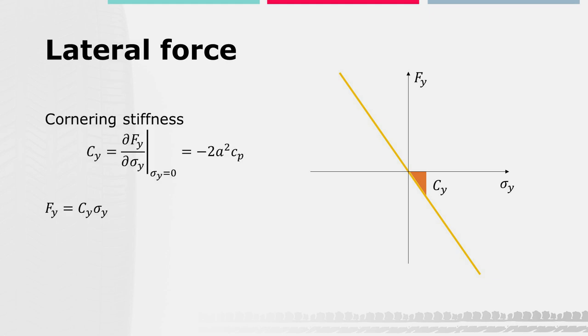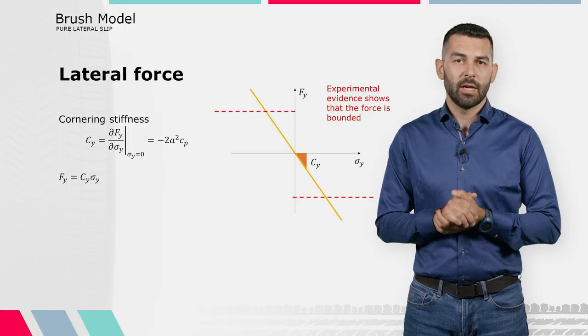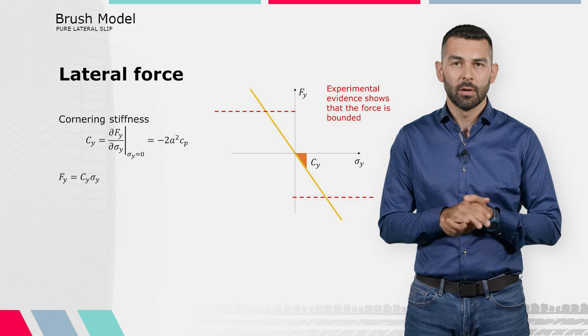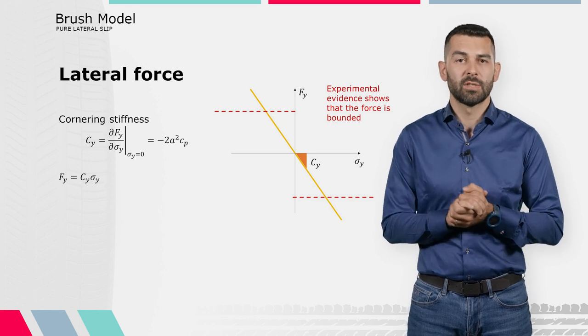The slope of the force versus slip curve is the cornering stiffness, which is a proportional gain between the force and the slip. However, experiments show that the force is linear with respect to the slip only for very small values of the slip itself.